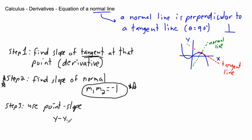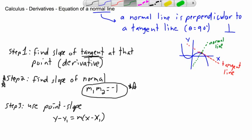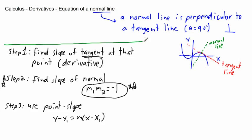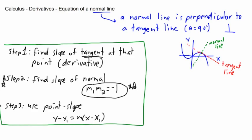Step three: once you know the slope of the normal, use point-slope form — y minus y1 equals m times x minus x1 — just as we did for the tangent line. So: find the slope of the tangent, convert it to the slope of the normal, then use point-slope.